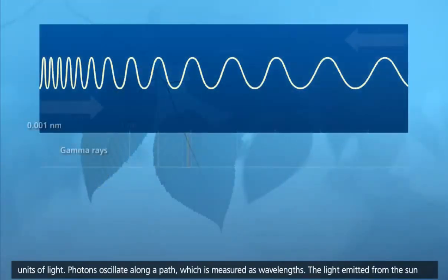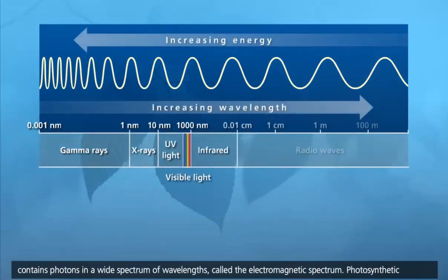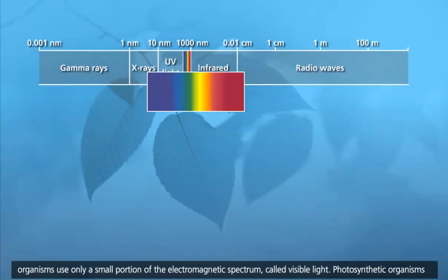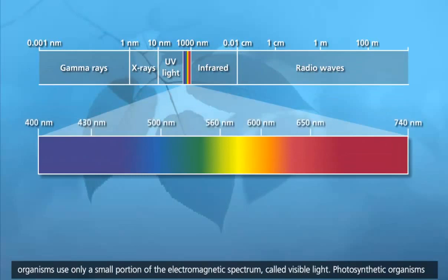The light emitted from the sun contains photons in a wide spectrum of wavelengths, called the electromagnetic spectrum. Photosynthetic organisms use only a small portion of the electromagnetic spectrum, called visible light.